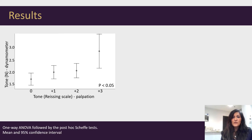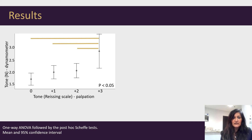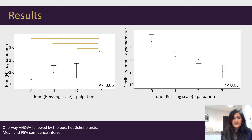When evaluating whether the palpation scores can be discriminated against dynamometry and ultrasound imaging, we found that there was a significant difference between tone measured with the dynamometer at palpation scores 0–3, 1–3, and 2–3. In other words, adjacent palpation scores could not be consistently discriminated.